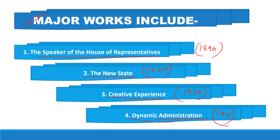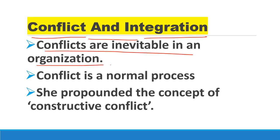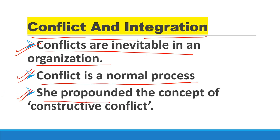Moving ahead with her theory of conflict and integration. According to Follett, conflict in an organization is not something new, nor is it inevitable, because in an organization many people with different minds and different perspectives work together. When there is a difference of opinion, conflict is a very natural thing. So conflict should not be treated as warfare or something alien to an organization; rather, we should conceive of it not as a wasteful or harmful thing, but as a normal process. Therefore, conflict should proceed in a constructive way according to Follett, and so she propounded the concept of constructive conflict.